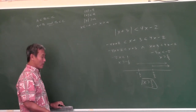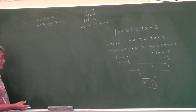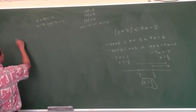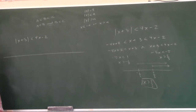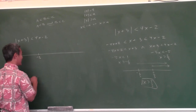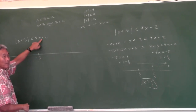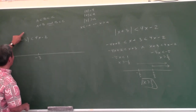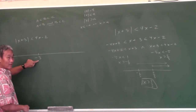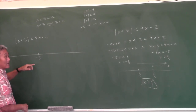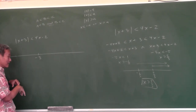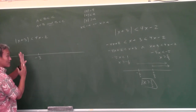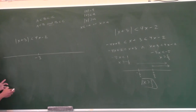When we use the number line method, we're just using the definition of absolute value. We make a number line. What do I put on the number line? Negative 3. Why not the zero for the other expression? Because this is the absolute value — whatever absolute value you have, you put the zero of that on the number line. Because on one side of zero the inside is positive, and on the other side it's negative.